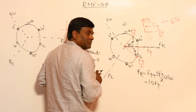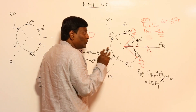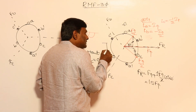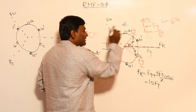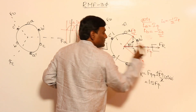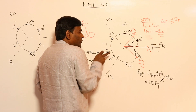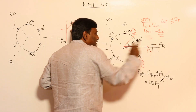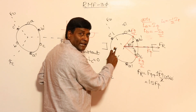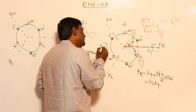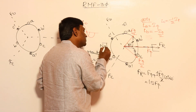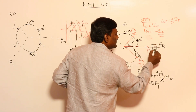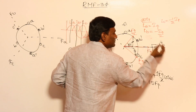This resultant MMF sets up a pole structure in the stator. If you sit in the air gap, the flux flows in the direction of the resultant — one side becomes the N pole and the other side becomes the S pole of the stator.